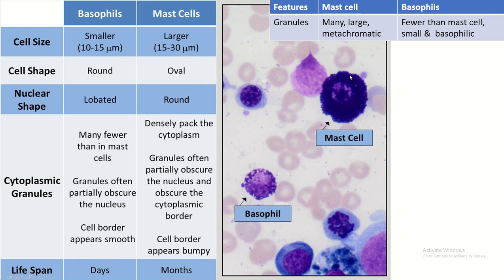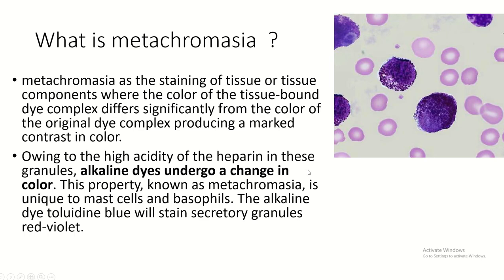Regarding granules, the mast cell has many large metachromatic granules, while basophils contain fewer and smaller basophilic granules. What is metachromasia? Metachromasia is a staining property where the color of some tissue components that bind a dye differs significantly from the color of the original dye, producing a marked contrast. Due to the high acidity of the heparin present within the mast cell, the alkaline dye causes a change in color, so in toluidine blue stain the secretory granules appear red-violet in color.